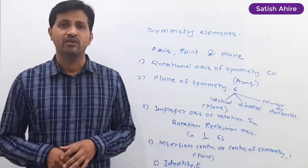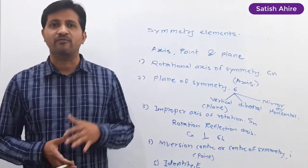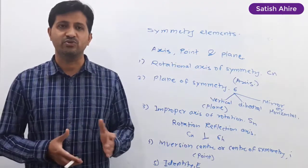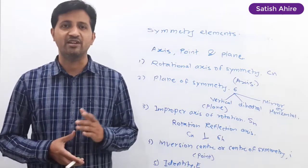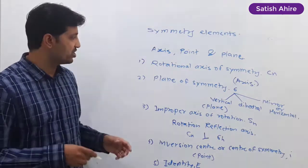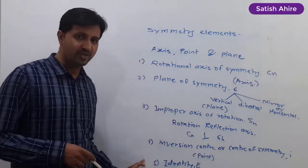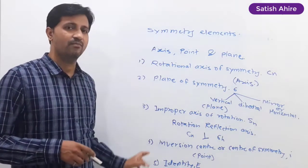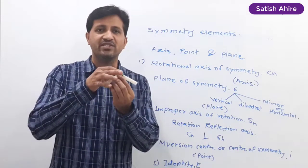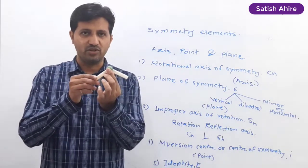The fifth and last symmetry element is the identity element. The capital letter E is used to represent this element. In this way, there are five possibilities for the presence of symmetry elements within a molecule, and I am going to explain all five concepts using this model.